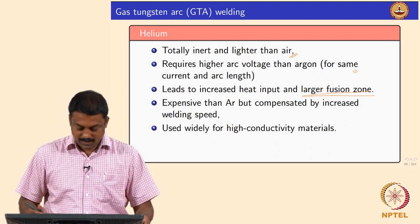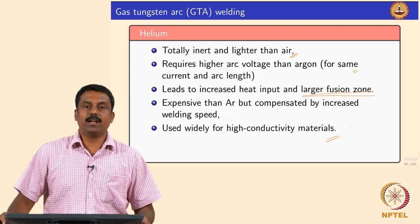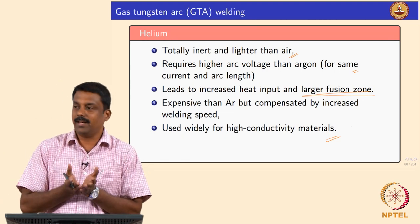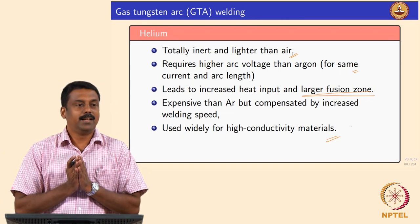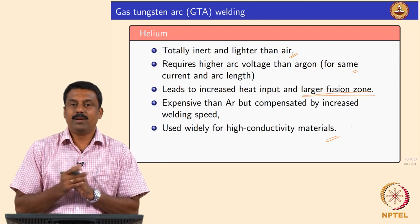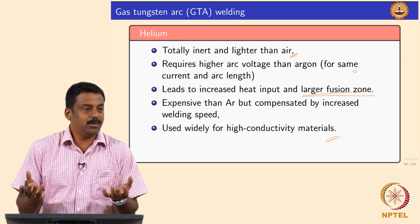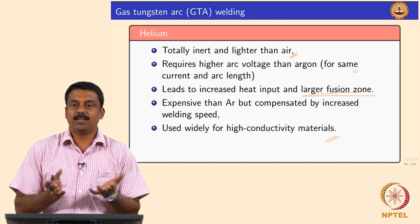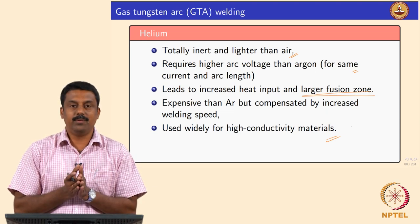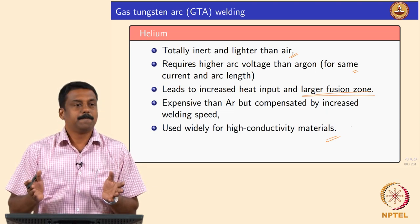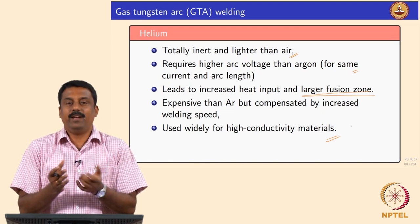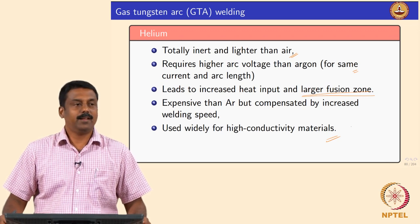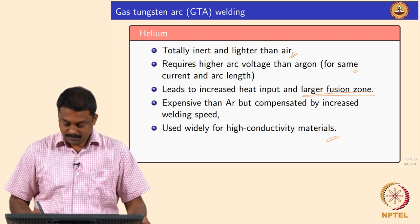The cost of buying helium is compensated by the increased welding speed, but only in a production environment. Helium is also widely used for high-conductivity materials because the arc energy is high. In high-conductivity materials, heat is dissipated so quickly that you need to supply more heat to melt the interface. For example, helium is very widely used for welding copper, which is a highly conductive material.